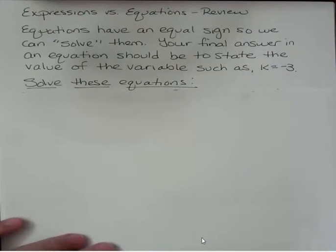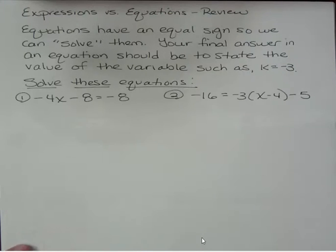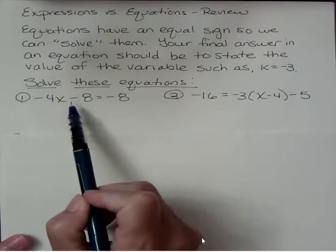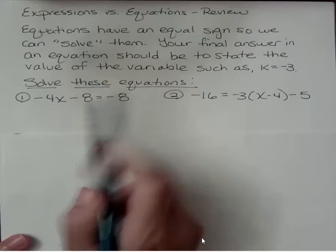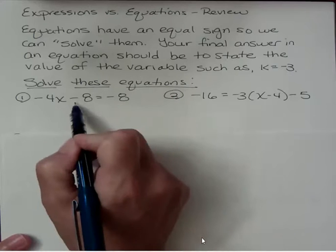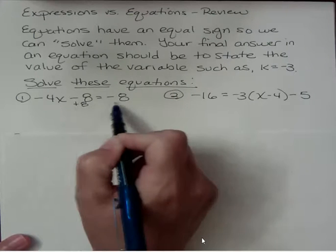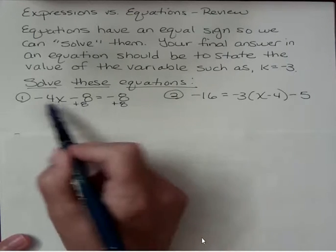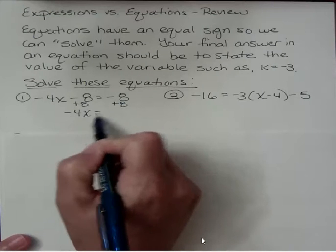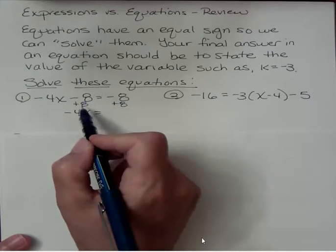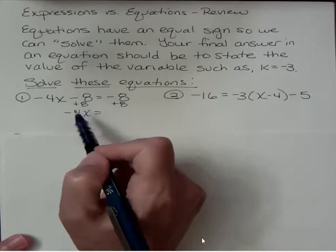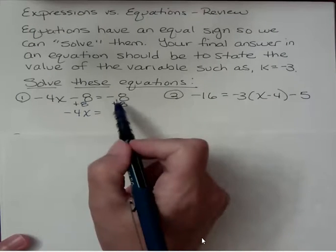Solve these equations. In the last video we saw expressions are simplified but equations are solved. Looking back at how we do this, in this case I always want to get rid of the constant term that's near the variable. I get rid of that minus 8 by adding 8 to both sides. I get negative 4x and then that negative 8 and positive 8 are opposite so they go away. I just had 0, I don't write it.